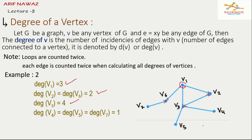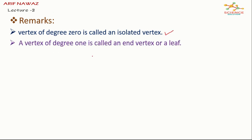Now we have some remarks. Vertex of degree zero is called an isolated vertex. A vertex of degree one is called an end vertex or a leaf. The degree of an edge e equals xy is equal to degree of x plus degree of y minus two.